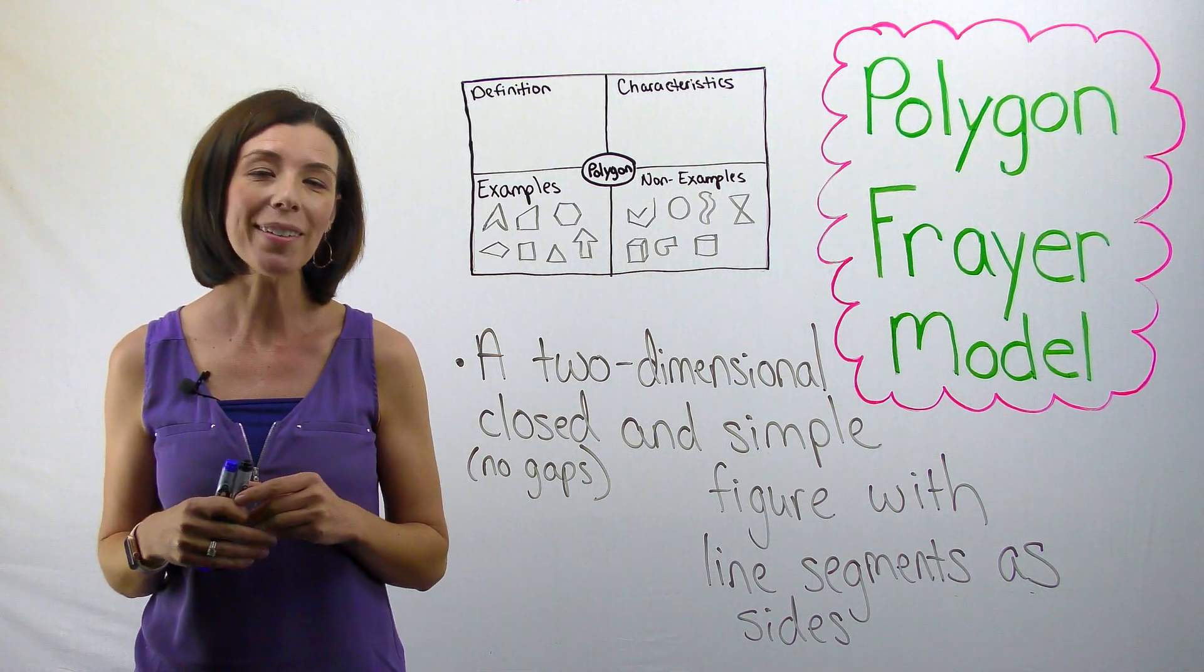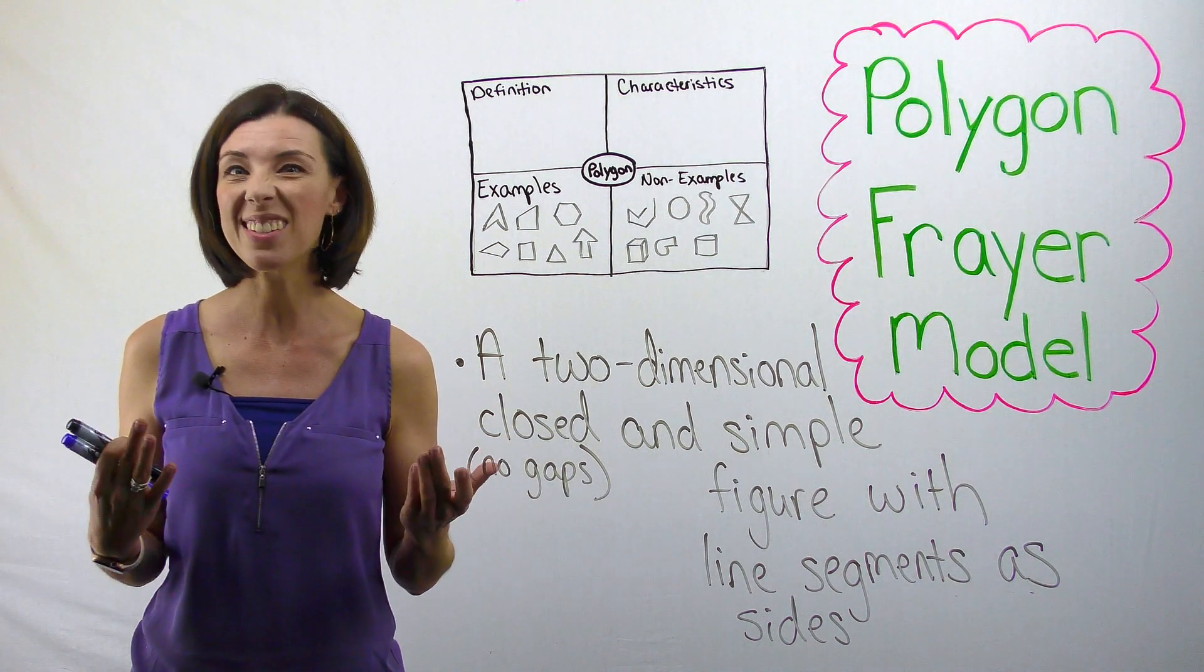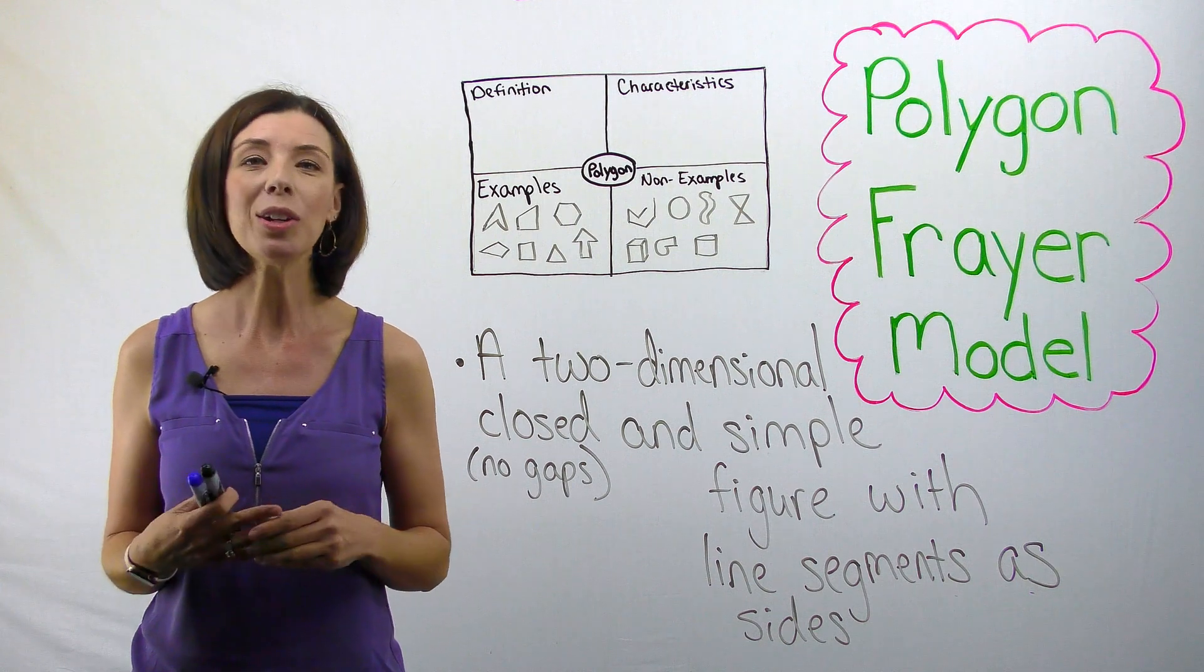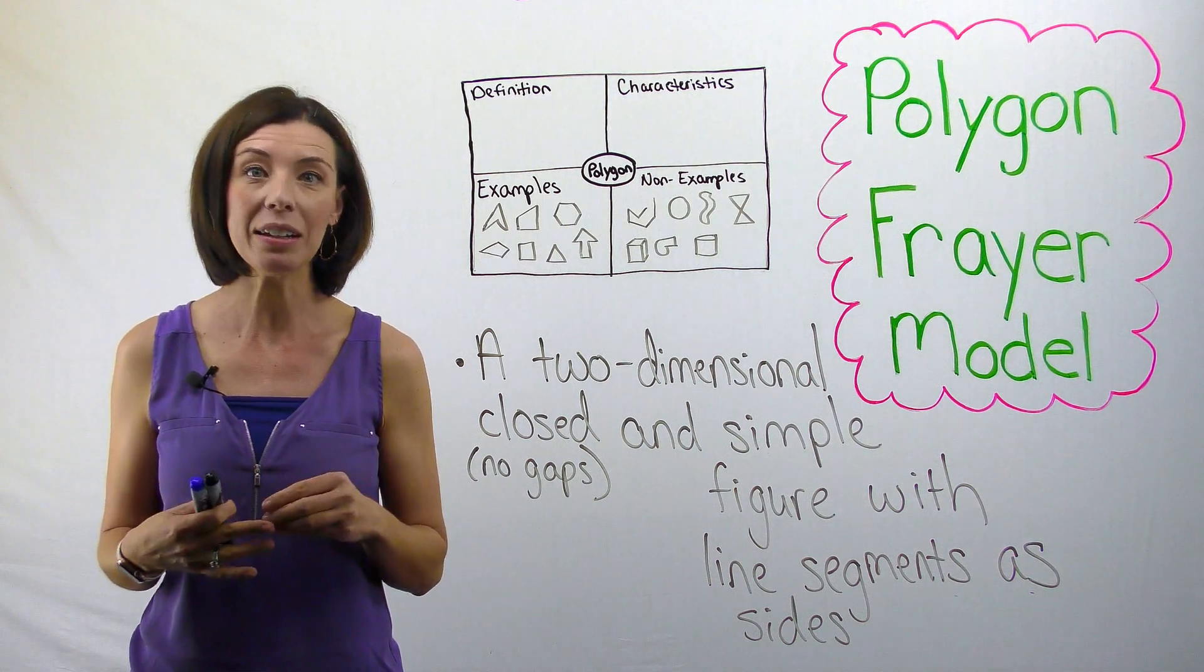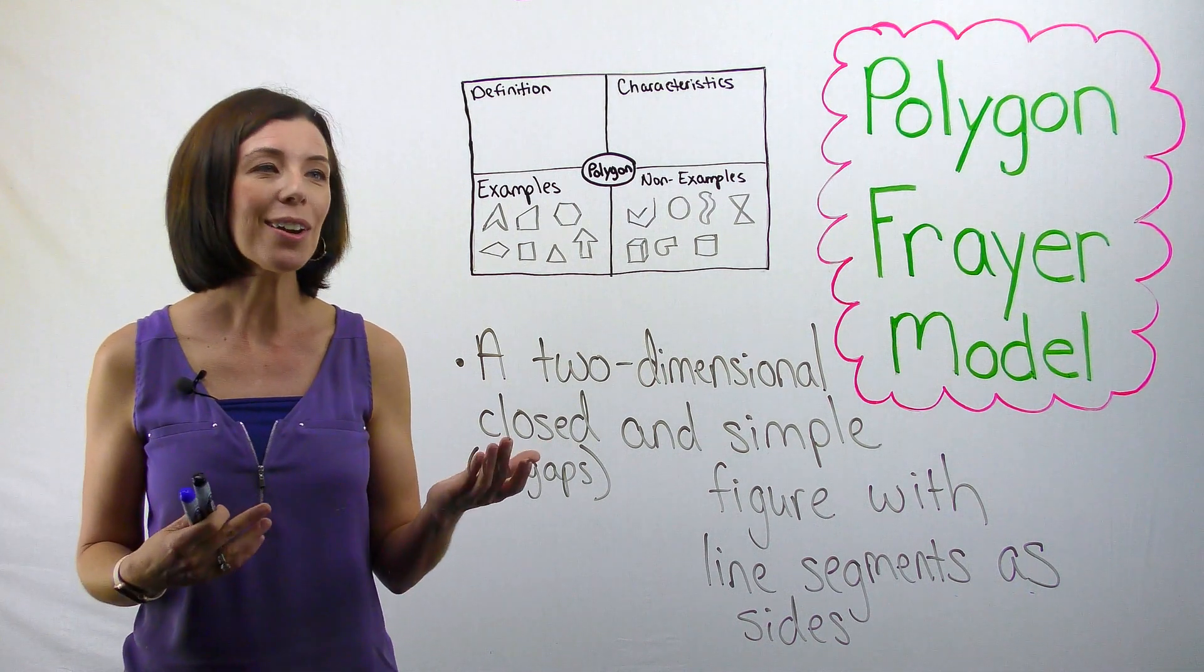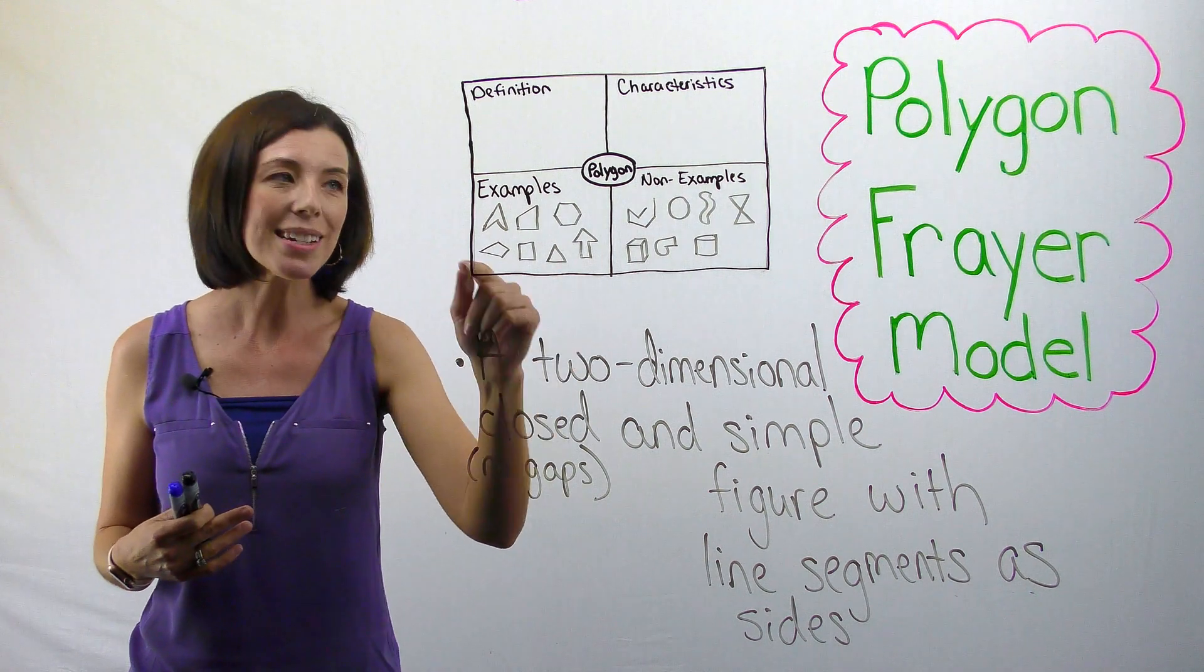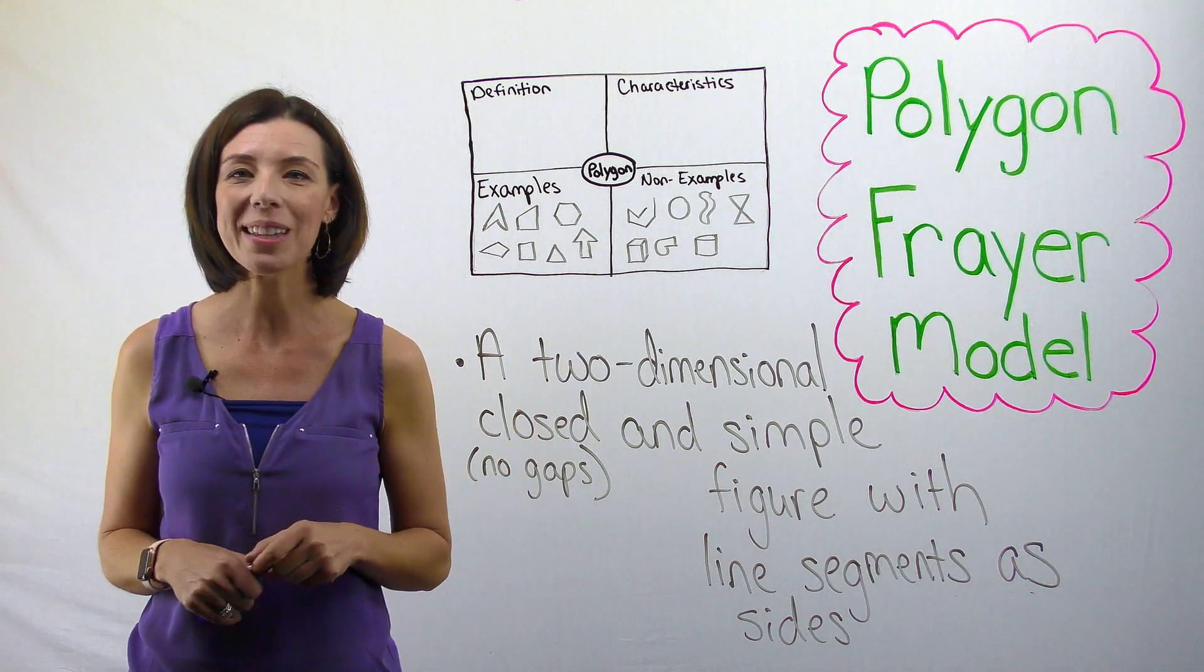Hopefully now you have a better idea of how you could use the Fryer model to explore different vocabulary terms. By the way, this is not just something we use in math. We can use it in reading, even in social studies, science, things like that. What's great about it is that it really allows students to come up with their own definition and own characteristics based on some examples and non-examples that you give them.